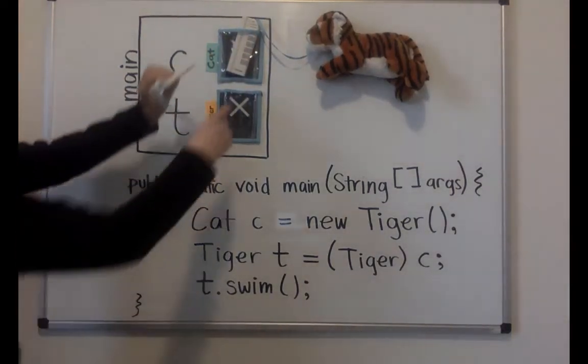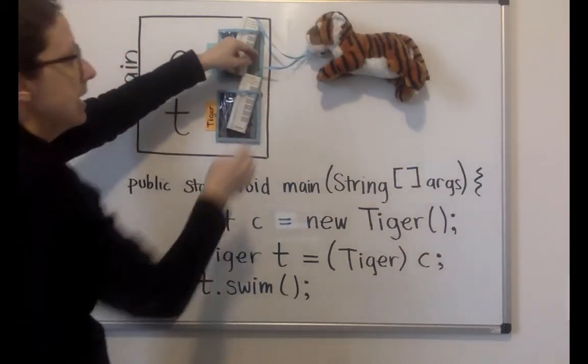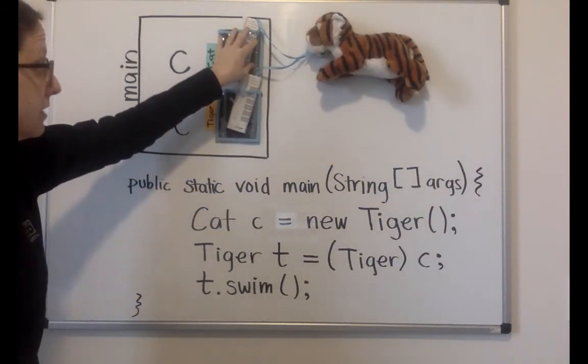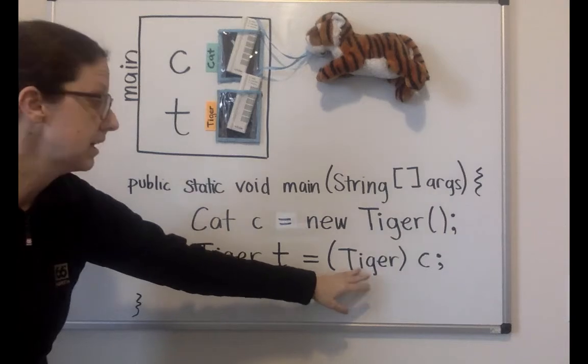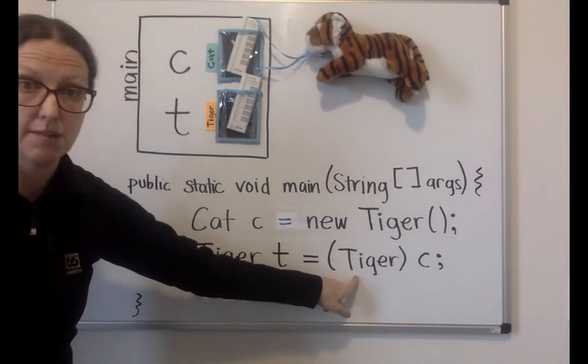Make a copy of the value in C. I make a copy of that remote control. And what a copy of a remote control means is that it is referencing the same object. So I make a copy of whatever's in C and put it in T.